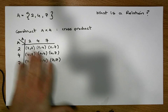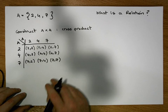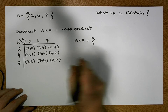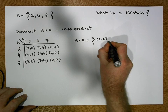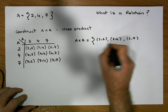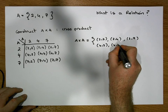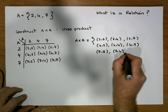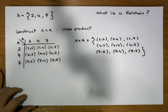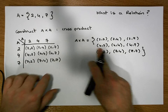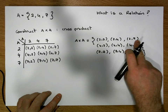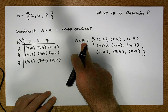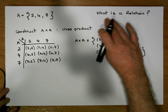The cross product isn't just this collection — to be rigorous, we need to take these ordered pairs and put them inside a set. So A cross A is the set containing: (2,2), (2,4), (2,7), (4,2), (4,4), (4,7), (7,2), (7,7). The cross product of A with itself is a set of all possible ordered pairs from A. Now we're interested in what a relation is.